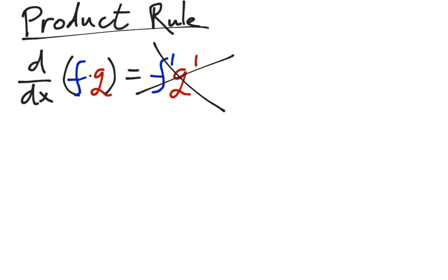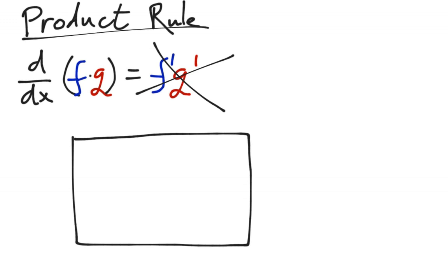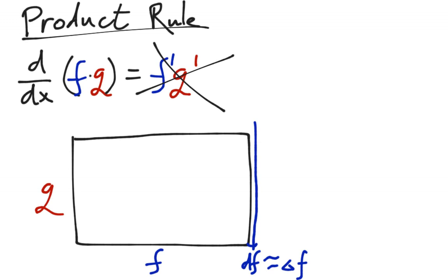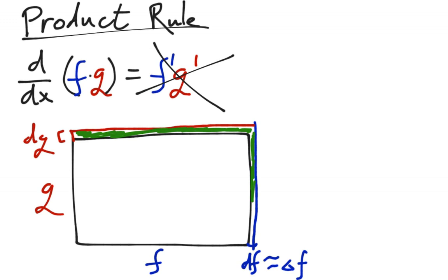How do we figure out what the product rule is? One way is to think about what f times g really is. If you think about it, f times g represents an area, where this side length is f and the height of this rectangle is g. When we take the derivative, the question is: how does this area change if we add on a little piece of f? We do that with a df — a small change in f. We draw in a width of about delta f, and similarly extend the rectangle in the g direction by dg.